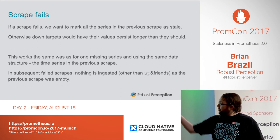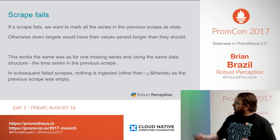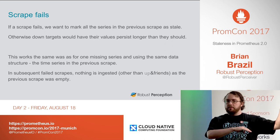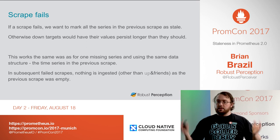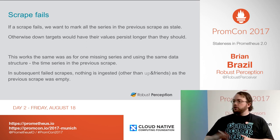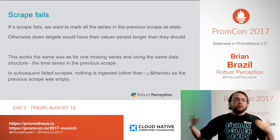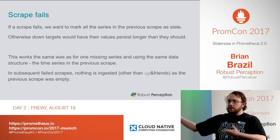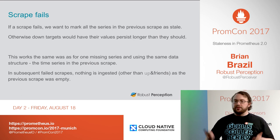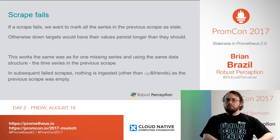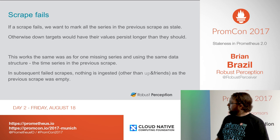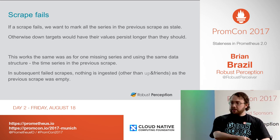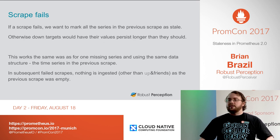Scrape failures are handled essentially the same way — we need to mark everything from the previous scrape as stale. Otherwise, a target could go down and then disappear and we'd keep resisting that. We use the exact same logic: take everything in the previous scrape, mark it stale. If there are more failures after that, the previous scrape was empty because it failed, so we don't have to do anything — that's nice and cheap.